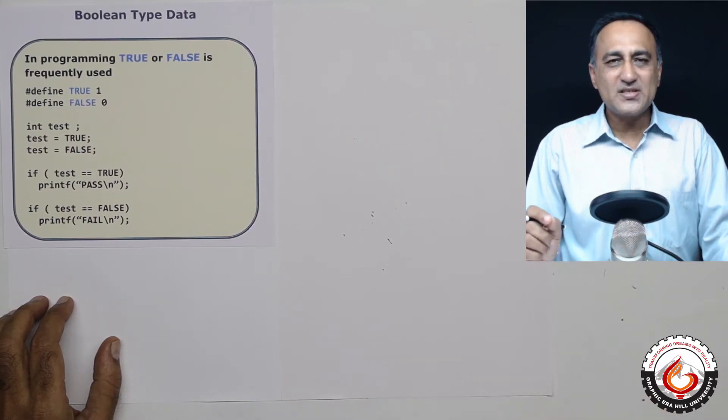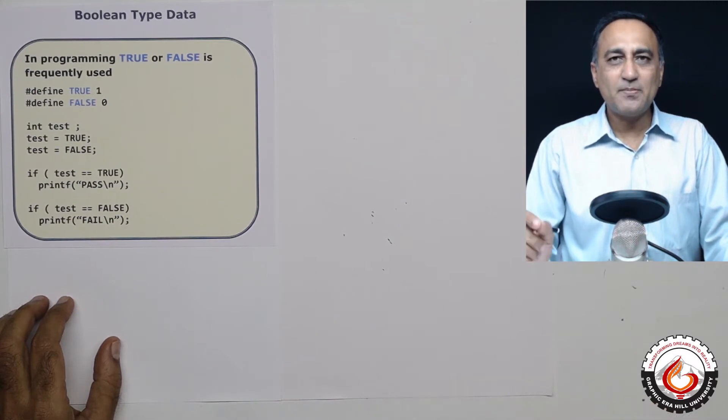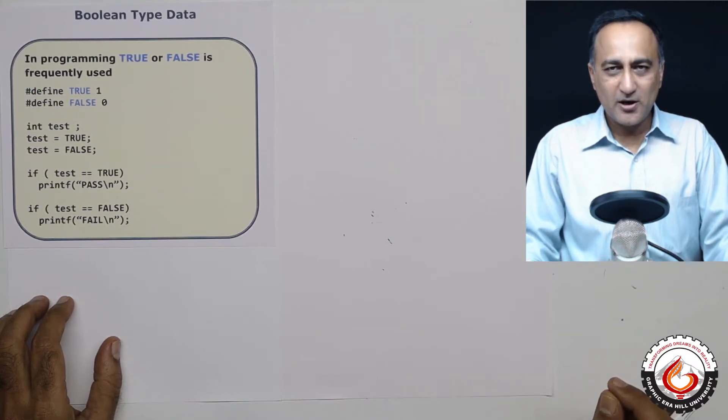Generally, true is any non-zero number, but usually it is one and false is always zero. So if the number is negative or non-zero, it is assumed to be true. If the number happens to be zero, it is assumed to be false.